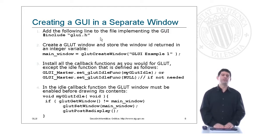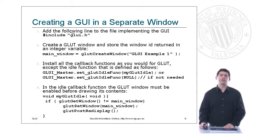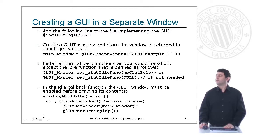Now that we know GLUI's features, we're going to create a GUI in a separate window. In order to do that we follow the next steps. First, we include GLUI in our source code. Then we create the main window and store its ID. After that, we define the GLUT idle function in this way. That GLUT idle function must have this structure.